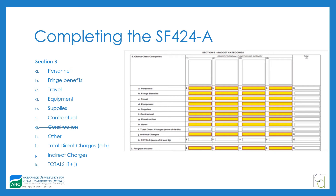Everything goes in column one, which matches line one from the previous page. I've seen grantees spread the budget across columns as if spreading it across three years — that's not necessary. You want to do that in your internal budget planning documents, but on the SF-424A, include everything in column one. If you're applying for the single grant program, use the single column. You should have nothing in construction.